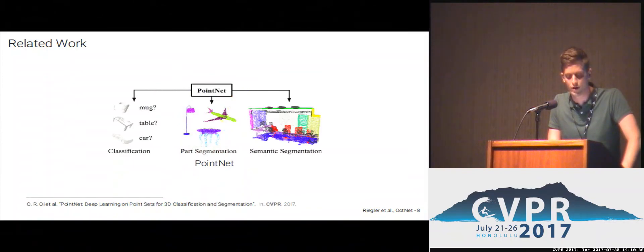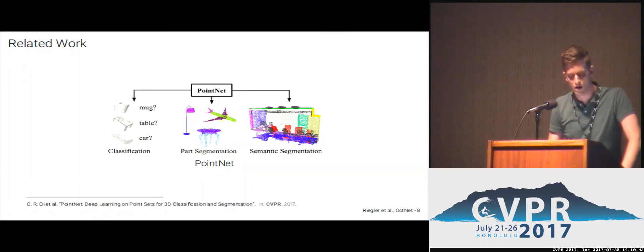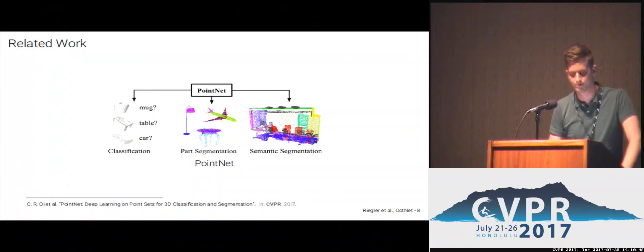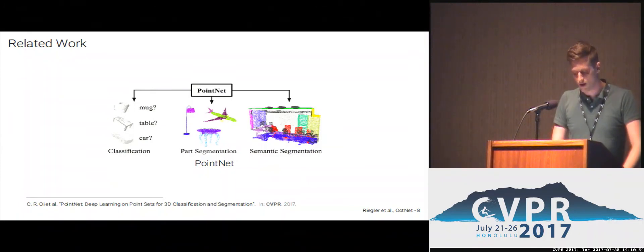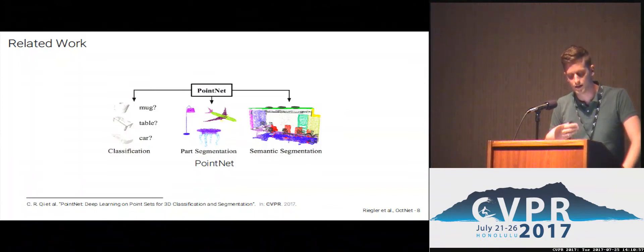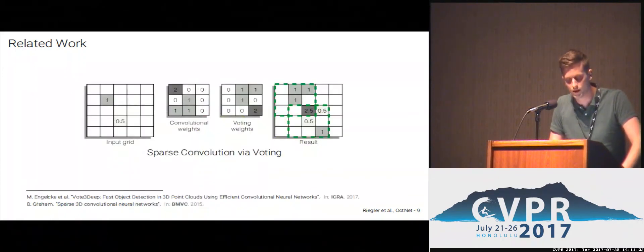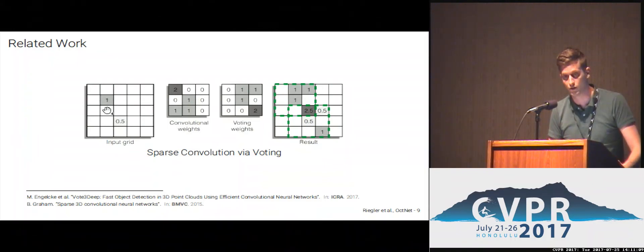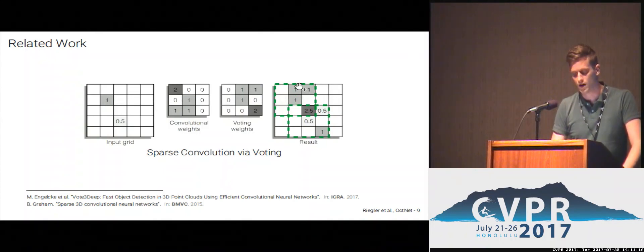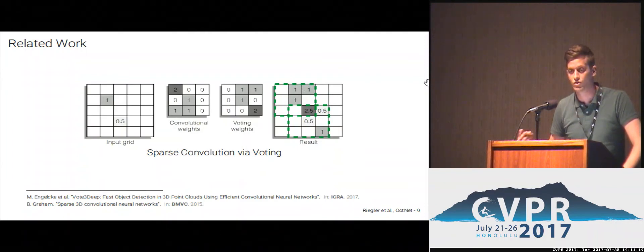Another work related to ours is PointNet, presented at this CVPR. They apply a multi-layer perceptron on each 3D point independently, and then pool over the number of points to get the global signature, enabling classification, part segmentation, or semantic segmentation. One problem is that it does not take into account the local structure of the points. Also related are sparse convolutions, where you apply convolutions only on non-empty voxels and push values to neighboring voxels, but memory increases after each convolution.